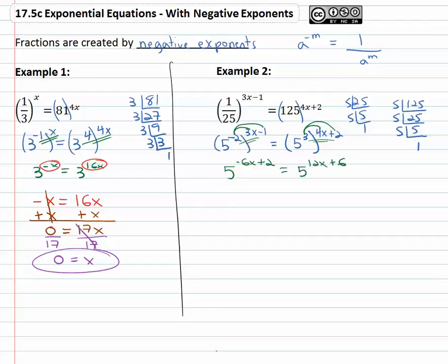And again, the bases are equal, so the exponents must also be equal. Negative six x plus two must equal twelve x plus six.